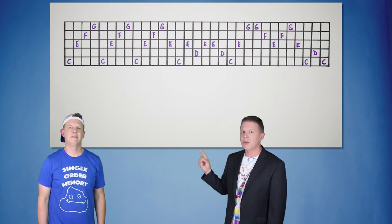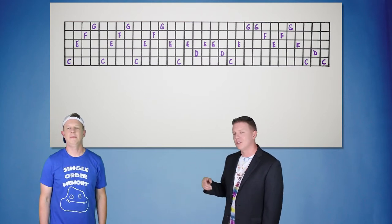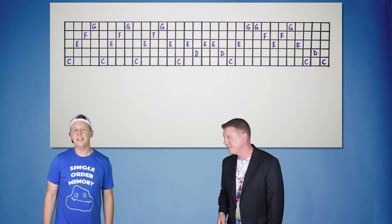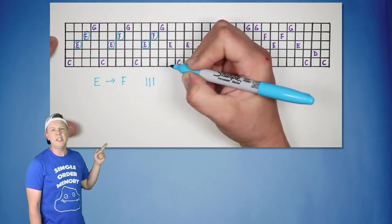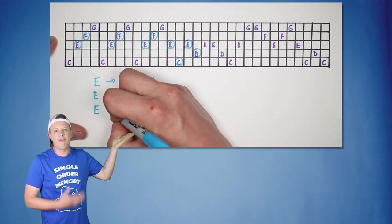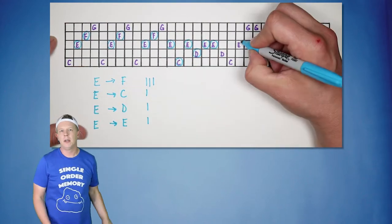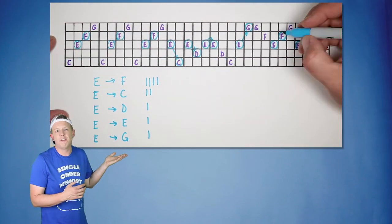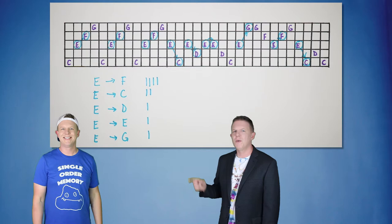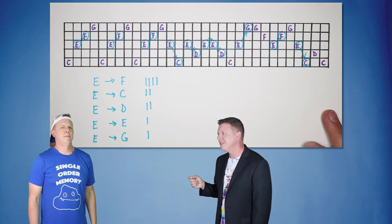Okay, single order memory. If you hear the note E, what note is most likely to come next? That's easy. I'll just go through the whole sequence and look for all the E's and keep count of what follows them how many times. That way I can tell you that chances are good an F is going to follow an E in the sequence.